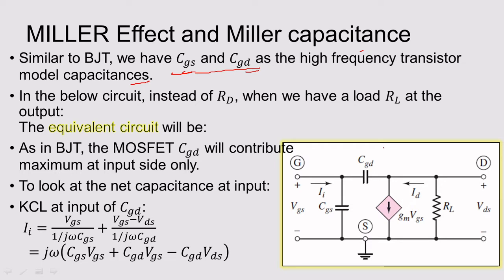Continuing from the last lecture, today we are going to study the Miller Effect and Miller Capacitance. I am taking Rd as Rl and continuing the derivation. Now I am going to apply KCL — first in the input side.